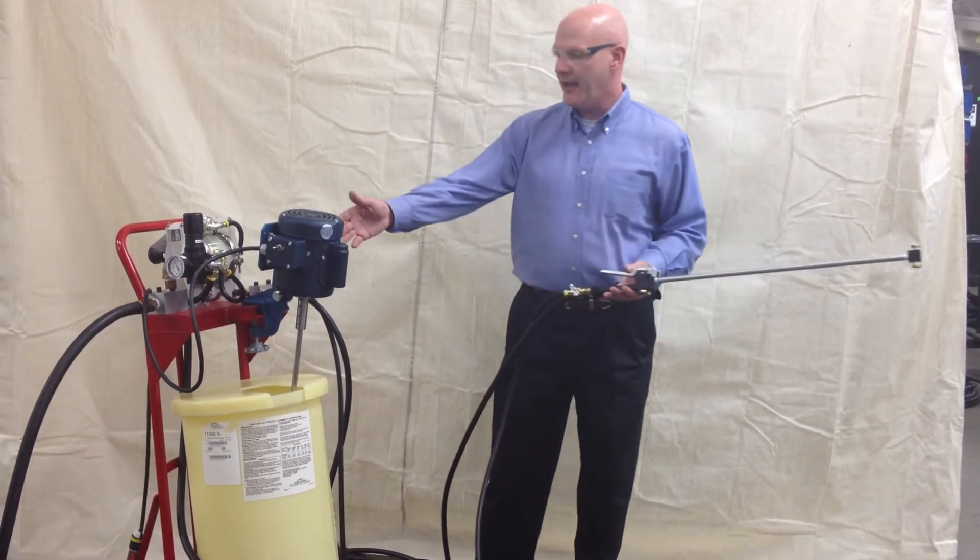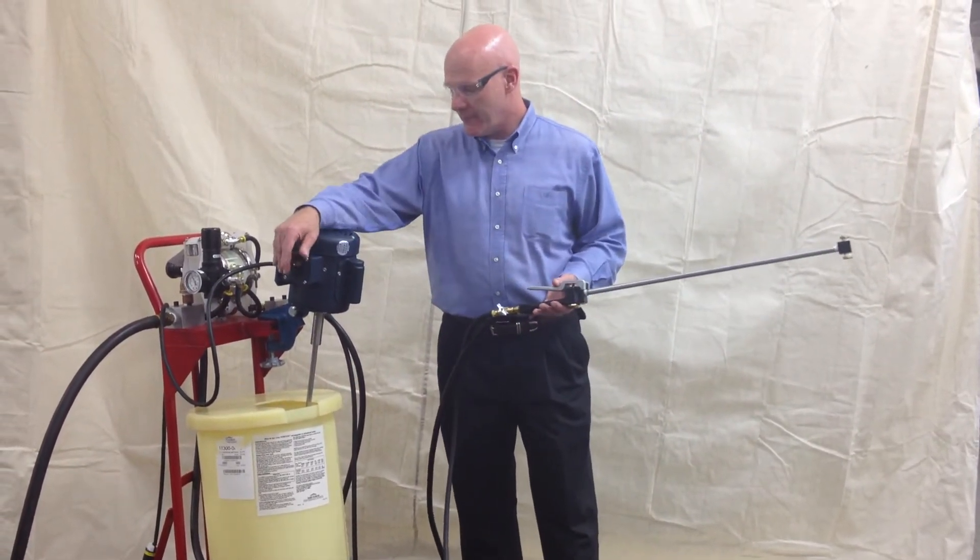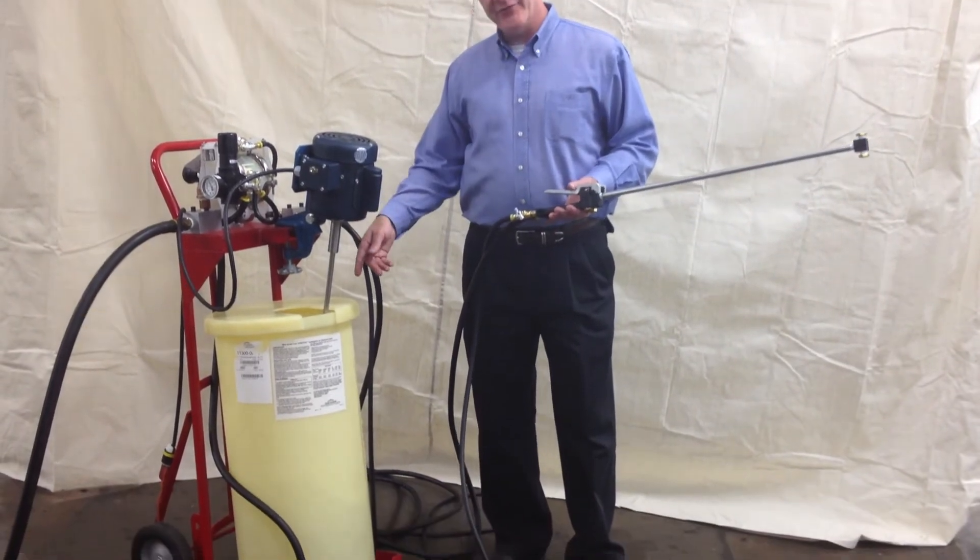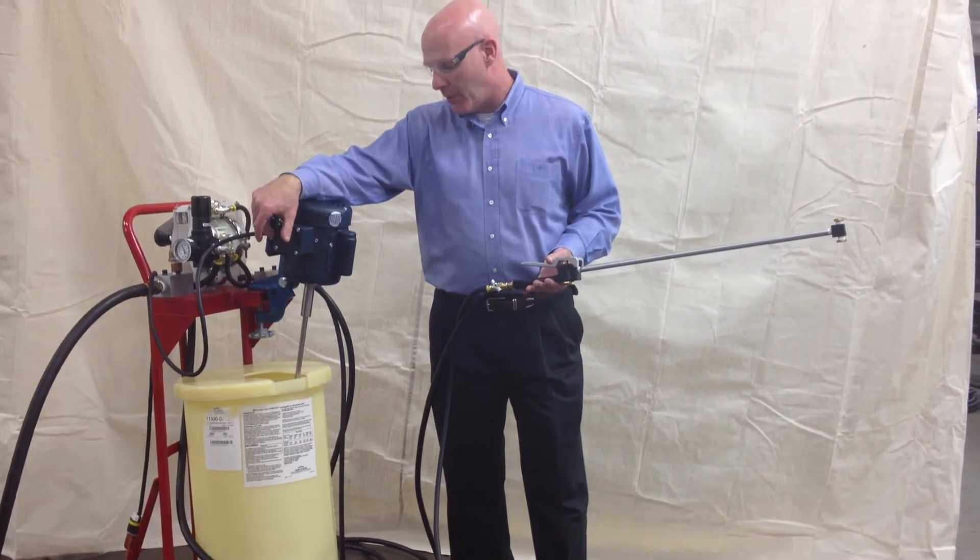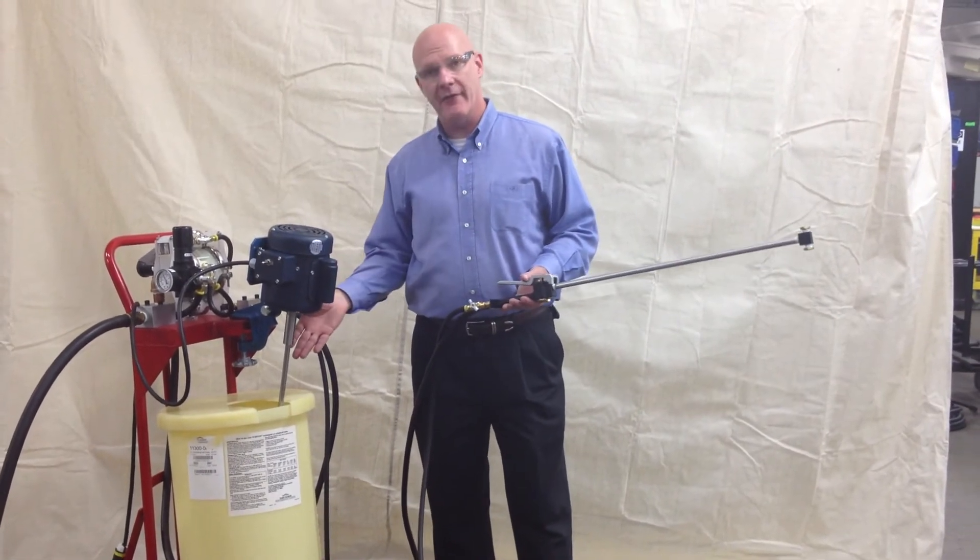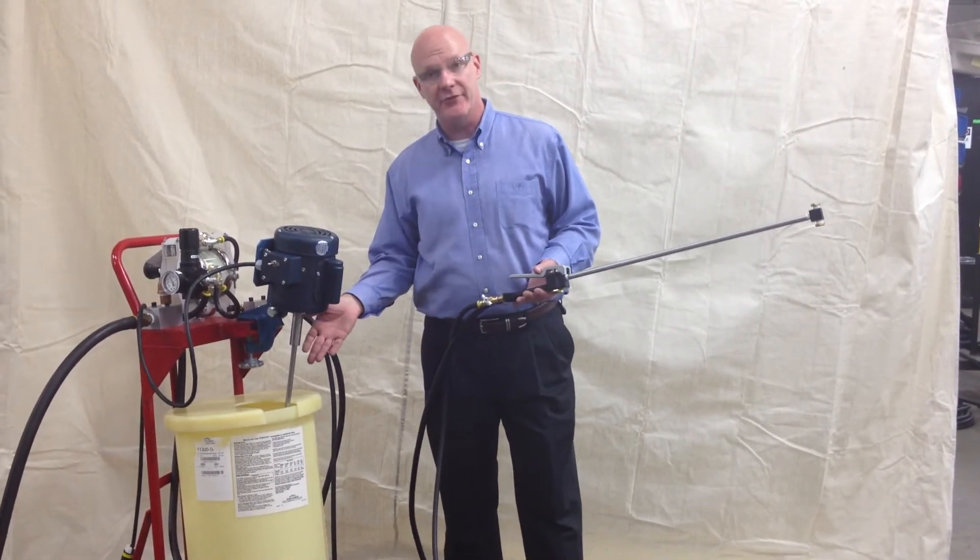The agitator is a quarter-horsepower AC motor. It runs a stainless steel shaft at 1,750 revolutions per minute. At the end of the shaft, we have a three-bladed propeller that's also stainless steel.